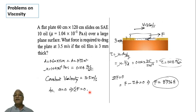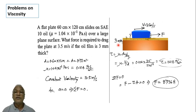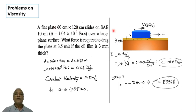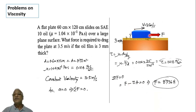To visualize: there is a flat surface with an oil film of thickness 3 mm (3 into 10 raised to minus 3 meters). A plate sits on the oil film with contact area 0.72 meter square — width 60 cm perpendicular to the board and 120 cm parallel to it. A force is applied to move the plate at a constant velocity of 3.5 meter per second.